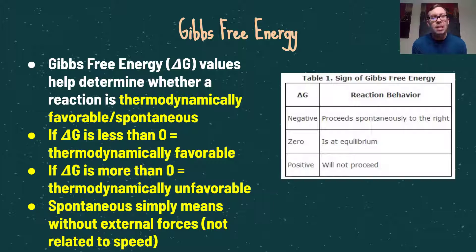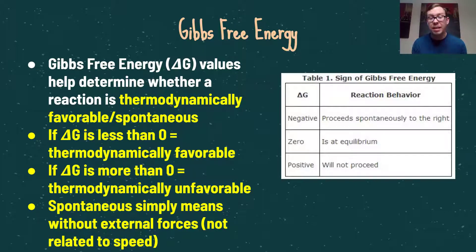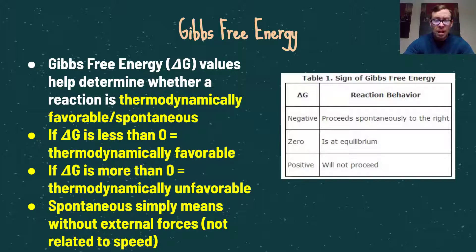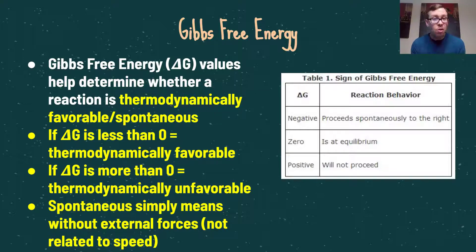Gibbs free energy is a critical value for determining whether a reaction is thermodynamically favorable. I prefer the term 'thermodynamically favorable' over 'spontaneous' because spontaneous implies speed, whereas thermodynamically favorable reactions can occur quickly or very slowly — the rate depends on kinetics, not delta G. If delta G is less than zero, the reaction is thermodynamically favorable and proceeds toward products. If delta G is greater than zero, it is thermodynamically unfavorable. If delta G equals zero, the system is at equilibrium.